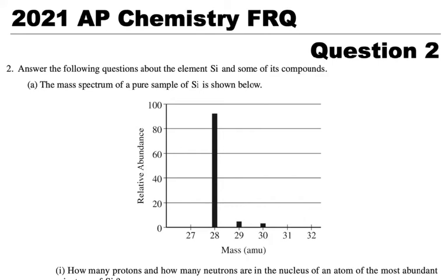We're going to go through the 2021 AP Chemistry FRQ question number two. This is answer the following questions about silicon and some of its compounds.